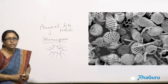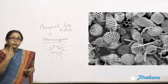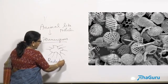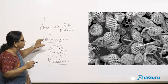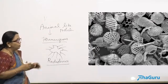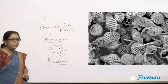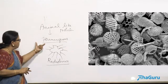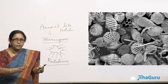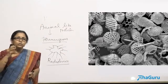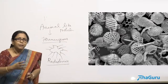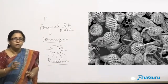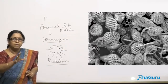Foraminifera are responsible for the formation of white cliffs. Another group of amoeboids is called radiolarians. The shell of radiolarians is not made of calcium carbonate but is silica-based. They also have pseudopodia projecting out from the shell. Radiolarians are also abundant in the sea.